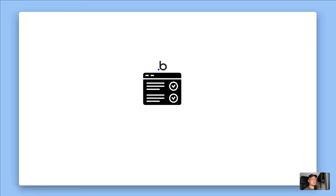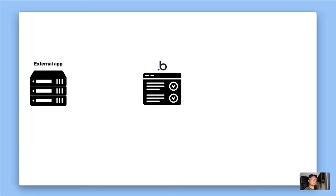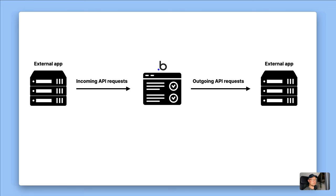Let's say this is your Bubble app in the middle of the screen, and here we have an external app. There are two different ways you can use APIs with Bubble: one is to receive incoming API requests from other apps, and the other is to make outgoing API requests to other apps. Incoming API requests are triggered by other apps, whereas outgoing API requests are triggered by your app. By far the most common are outgoing API requests, where your app is triggering an interaction with a third-party app.